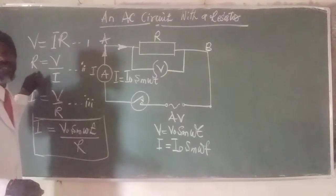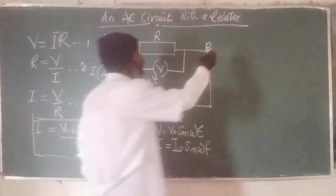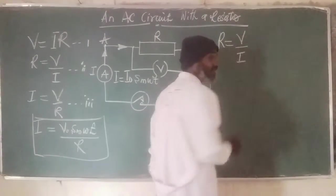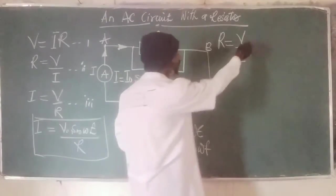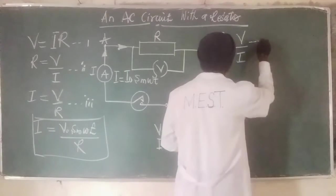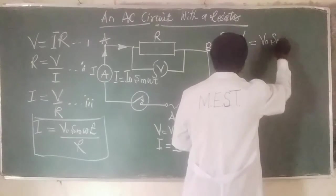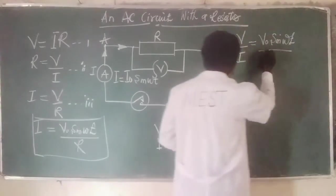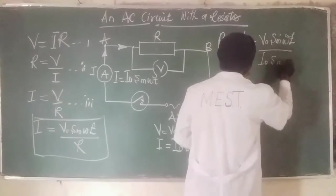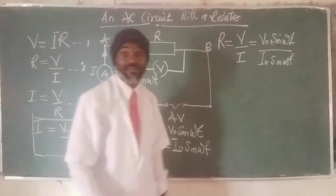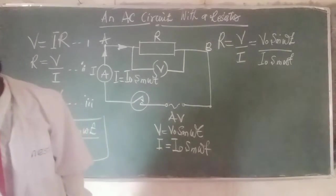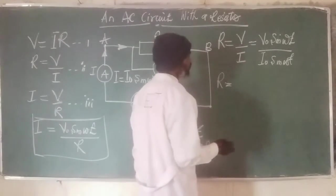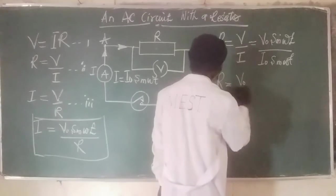So suppose we want to find the value of the resistance in the circuit. Still what we need to do is R equals V all over I. But this number one, we should know that V has been represented by V naught sine omega T. So with this, R can be found as V naught over I naught.